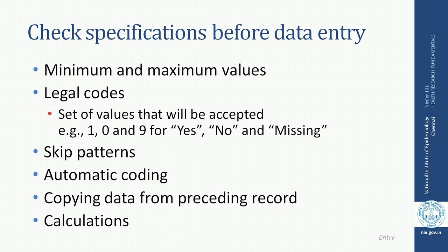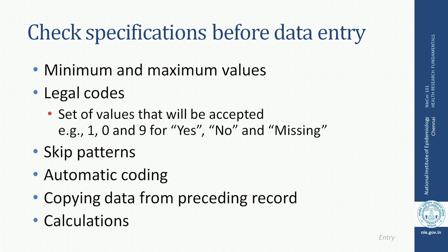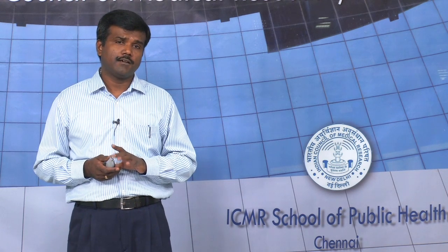Before data entry, one makes sure that there are checks and balances. This is also very important for ensuring internal validity. You specify minimum and maximum values that can enter into a particular field. For example, if a study is about children up to 5 years, the age column will not entertain anything more than 5 years at the time of data entry itself, so that it minimizes errors even at the time of data entry.